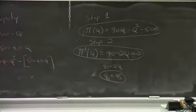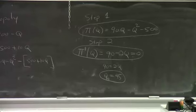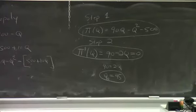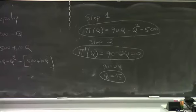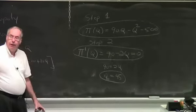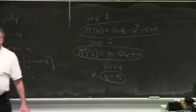So that's really all part of step two, finding the critical value of q where the first derivative is zero. In this problem, there's only one value of q where the first derivative is zero. What's step three?